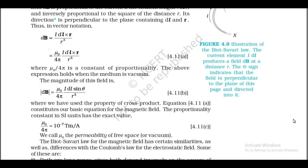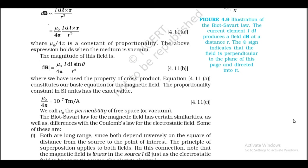In vector notation: dB = (μ₀/4π) · i(dl × r̂)/r². The above expression holds when the medium is vacuum. The magnitude is dB = (μ₀/4π) · i·dl·sinθ/r², where we have used the property of the cross product. This constitutes our basic equation for the magnetic field. The proportionality constant in SI units has the exact value μ₀/(4π) = 10⁻⁷ T·m/A. We call μ₀ the permeability of free space or vacuum.